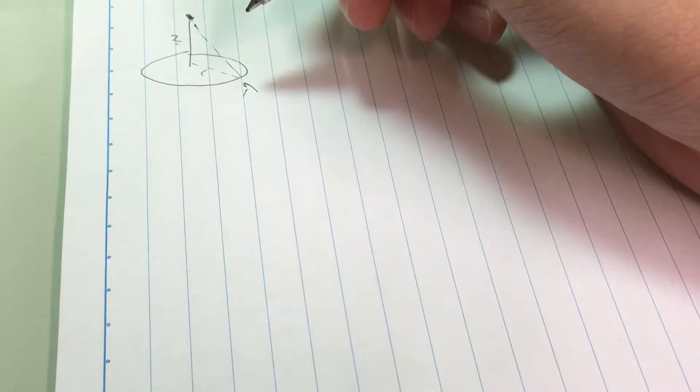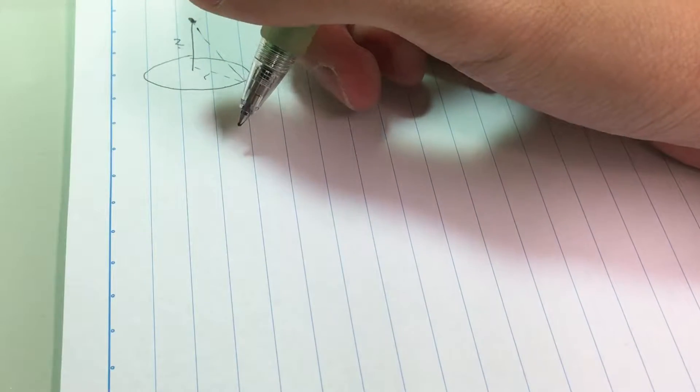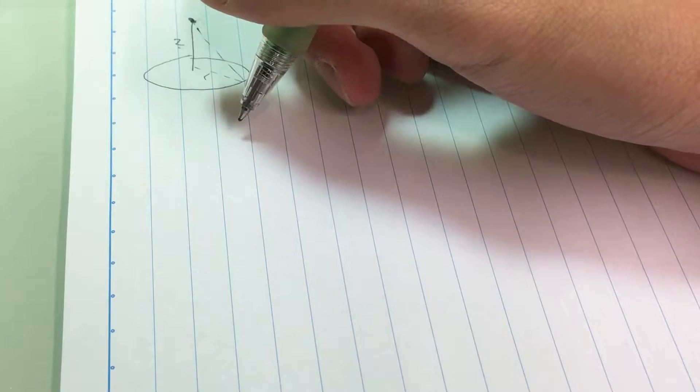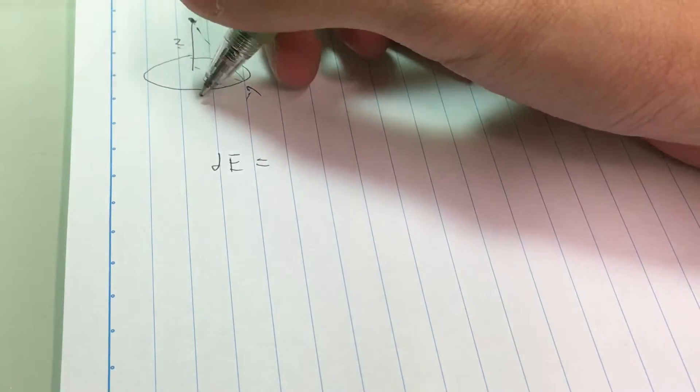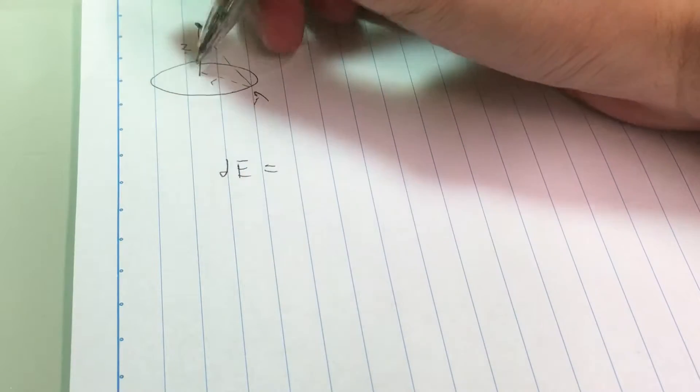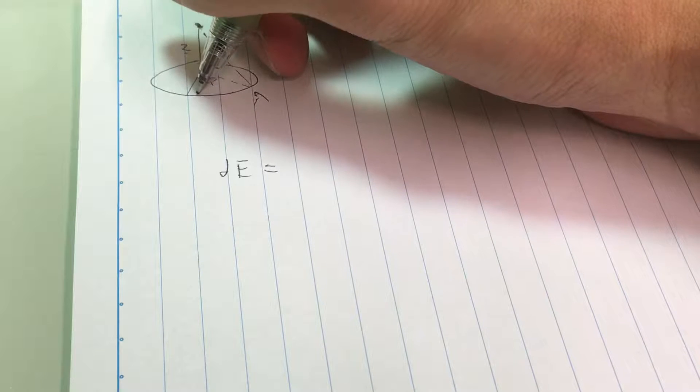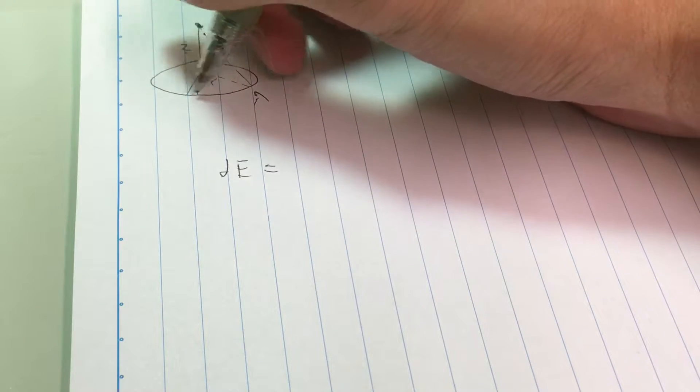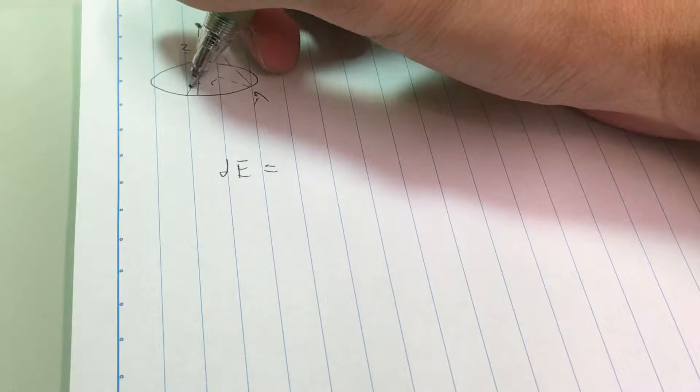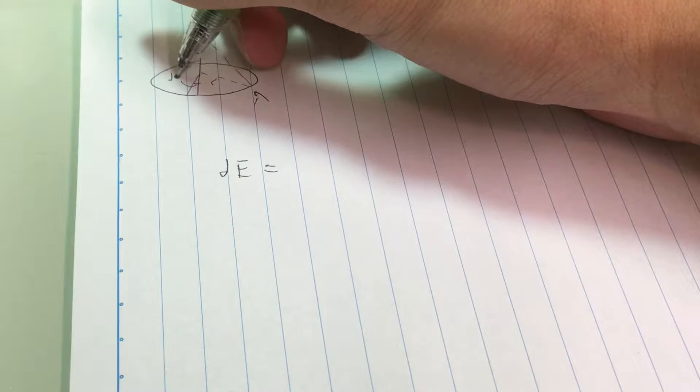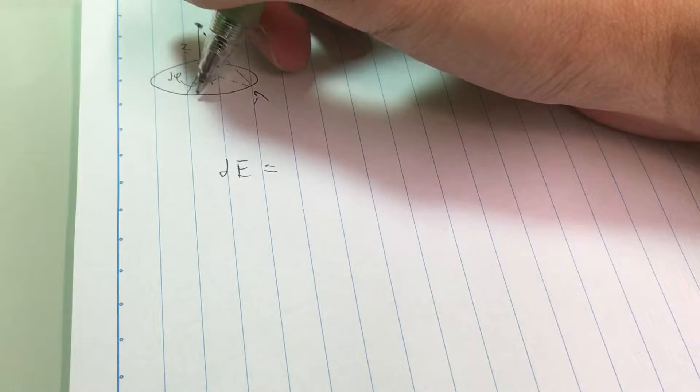The trick to all these questions is really always just setting up the right integral. We first have to consider a tiny piece of electric field coming from this hoop. We have to consider a tiny piece of this hoop, an infinitely small part. This angle is d phi.